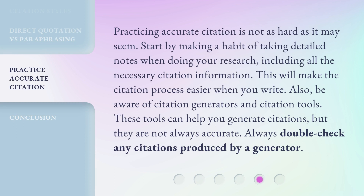Practicing accurate citation is not as hard as it may seem. Start by making a habit of taking detailed notes when doing your research, including all the necessary citation information. This will make the citation process easier when you write. Also, be aware of citation generators and citation tools. These tools can help you generate citations, but they are not always accurate. Always double-check any citations produced by a generator.